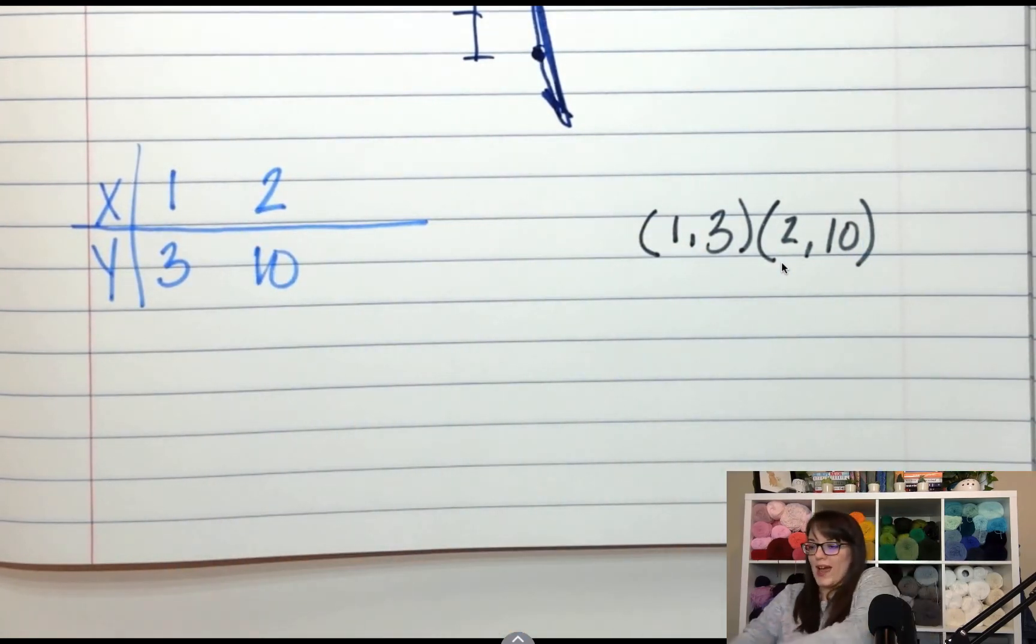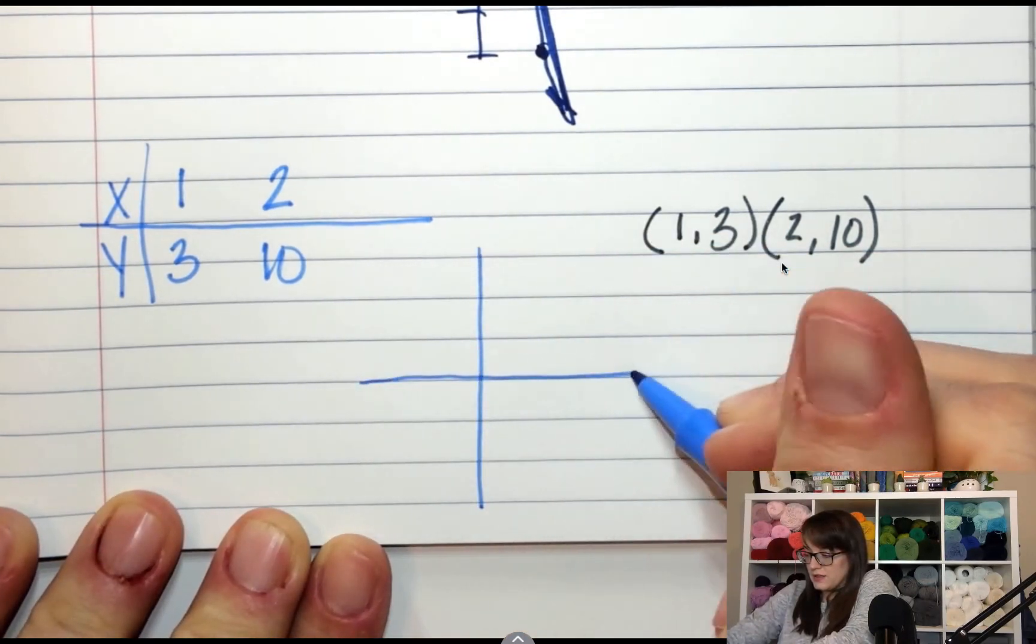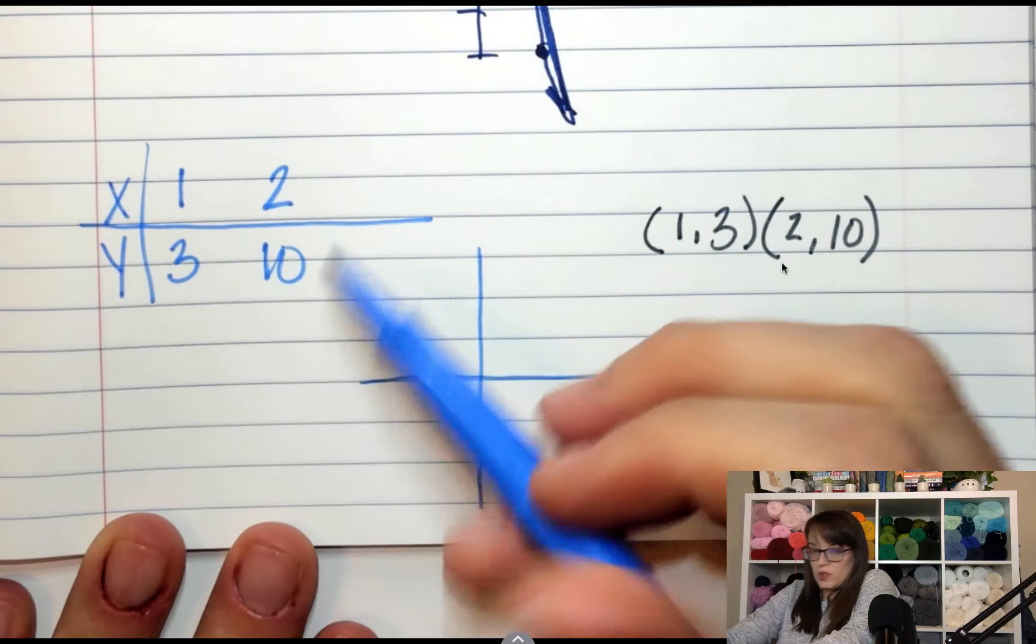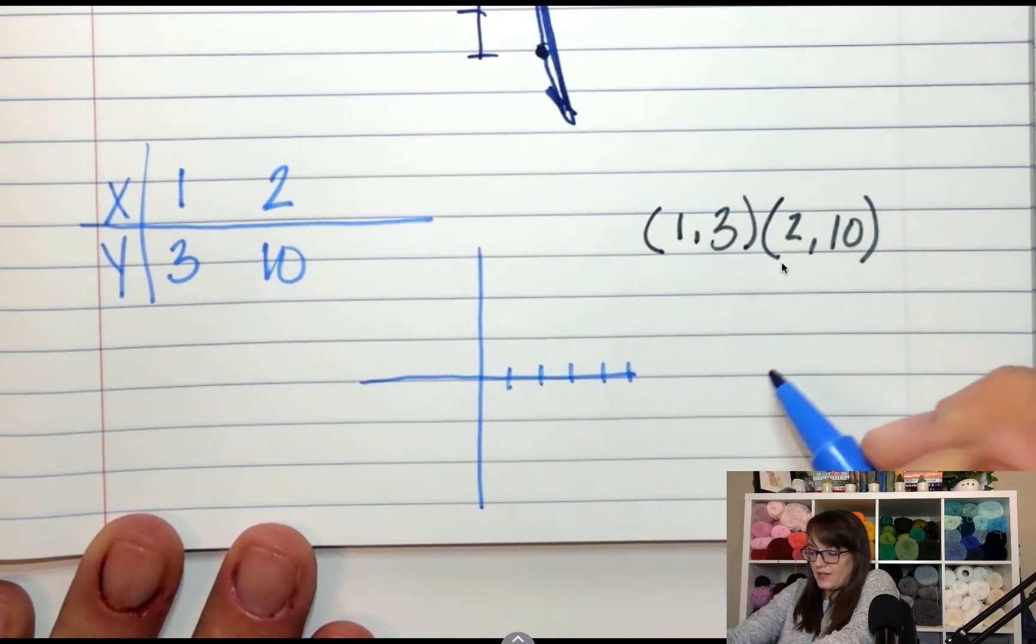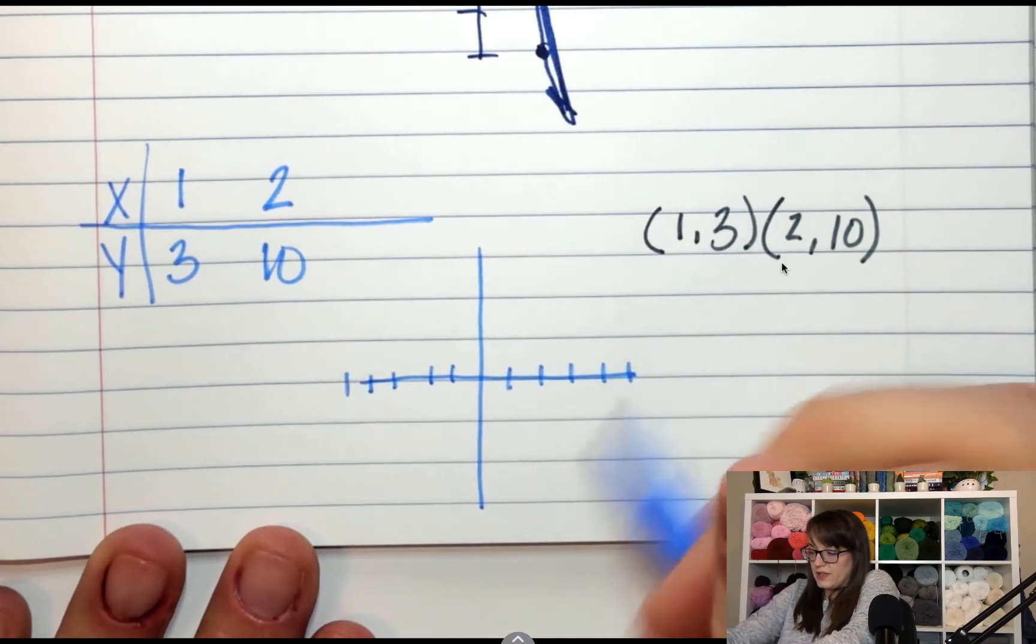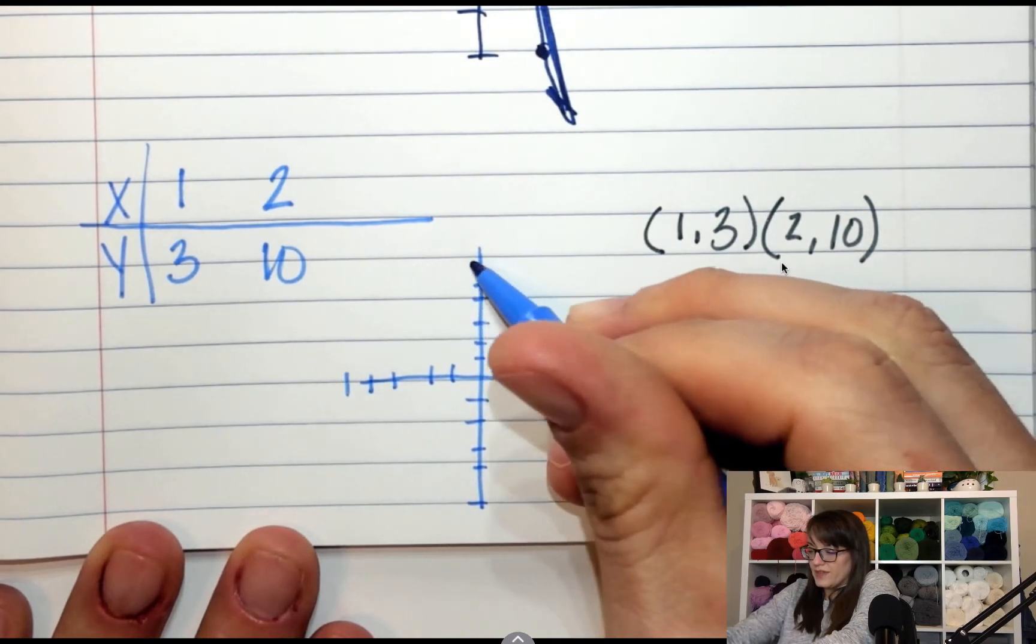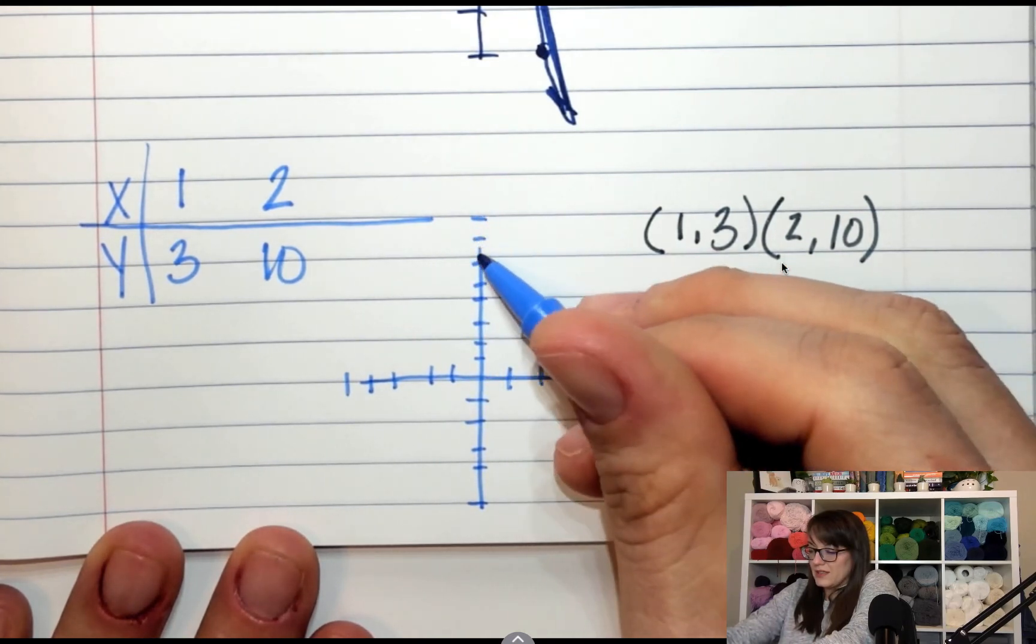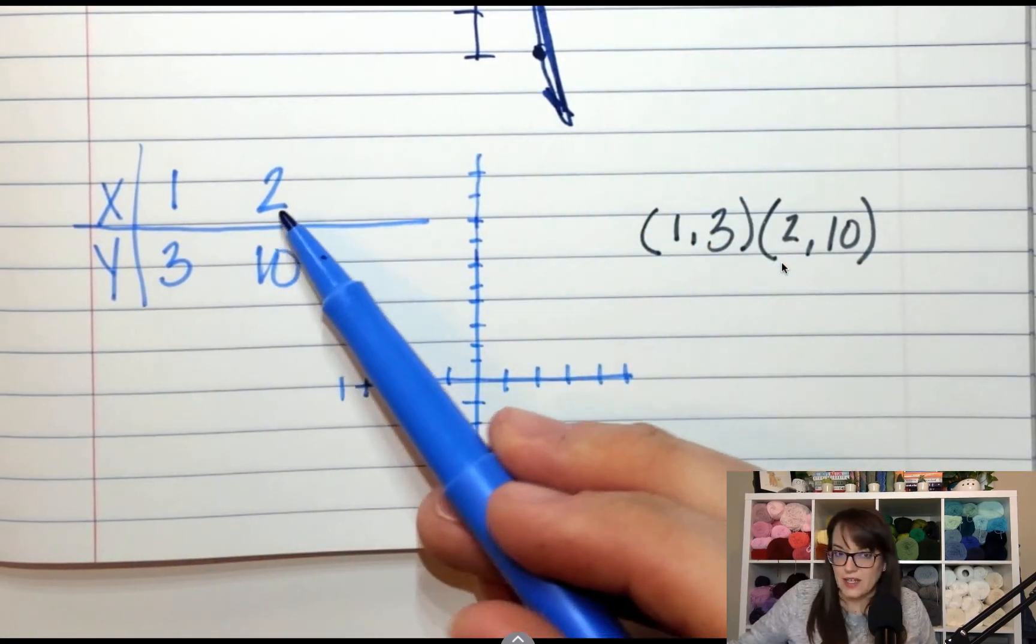Now, if I wanted to graph this, these two dots, I'm going to go 1, 2, 3, 4, 5. 1, 2, 3, 4, 5. I don't need negatives, but 1, 2, 3, 4, 5, 6, 7, 8, 9, 10. Because I have 10 over here.